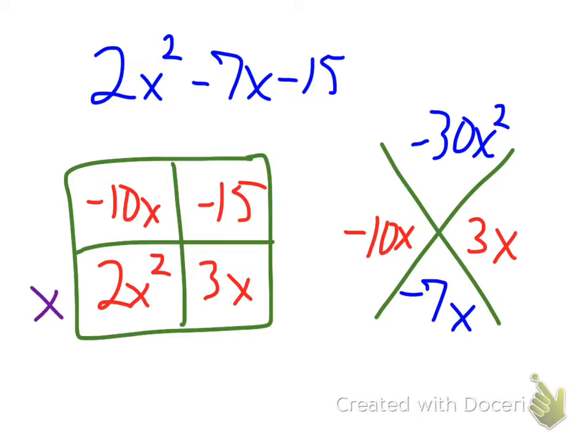Then once I have that, x times whatever belongs here gives me my 2x squared, and that is a 2x. And x times this will give me 3x, so that is a plus 3. And 2x times this will give me my negative 10x, and that is a negative 5.